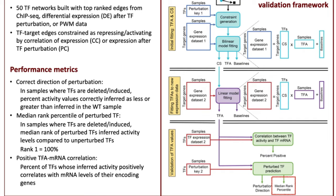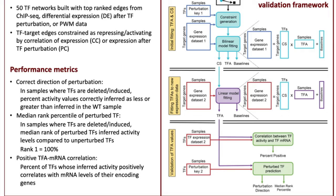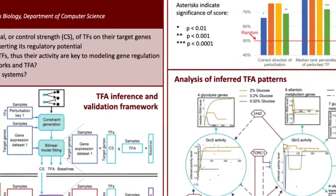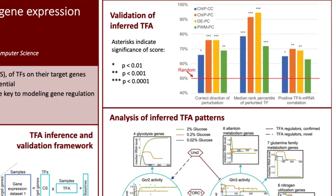This rank is calculated for each individual sample, then we take the median and convert that into a percentile, such that rank 1 is equal to 100%. Lastly, we calculate the correlation between transcription factor gene expression levels and their inferred activity levels, where we expect positive correlations. These three accuracy metrics were then used to evaluate the results from using four different starting networks. All four outperformed random expectations, but CHIPPC in orange and DEPPC in yellow clearly outperformed the other two networks.